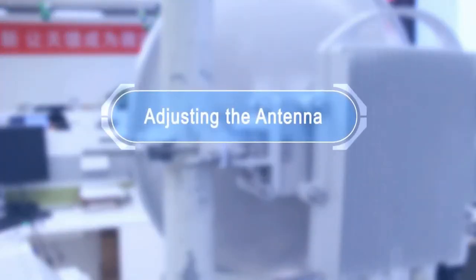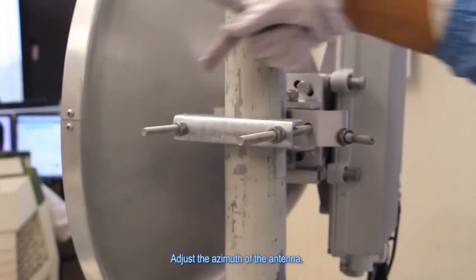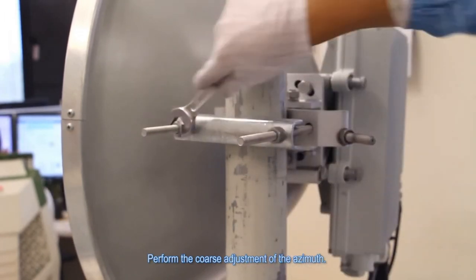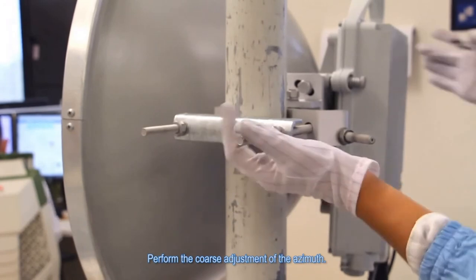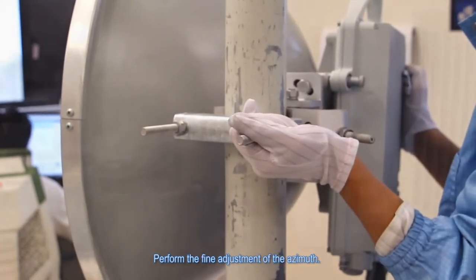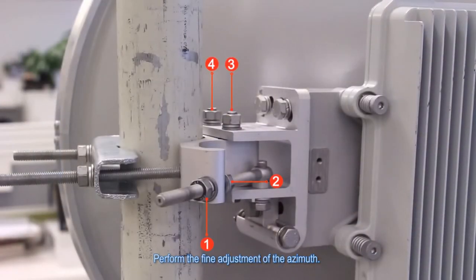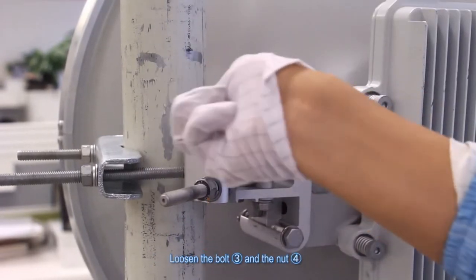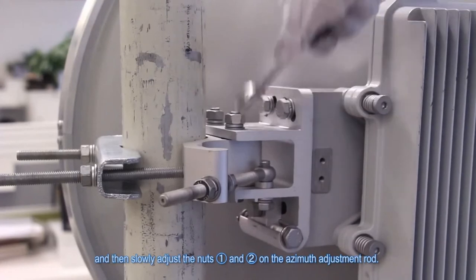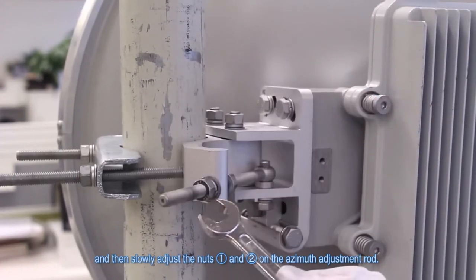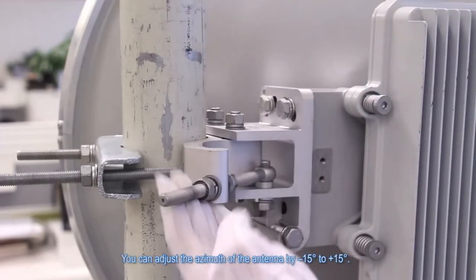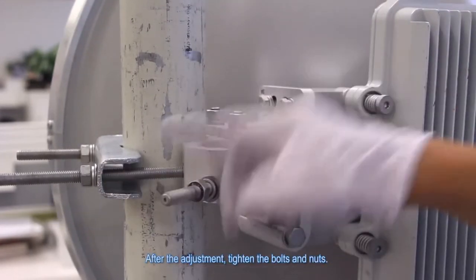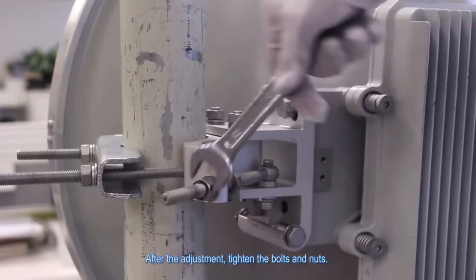Adjusting the antenna. Adjust the azimuth of the antenna. Perform the coarse adjustment of the azimuth. Perform the fine adjustment of the azimuth. Loosen bolt 3 and nut 4 and then slowly adjust nuts 1 and 2 on the azimuth adjustment rod. You can adjust the azimuth of the antenna by negative 15 degrees to positive 15 degrees. After the adjustment, tighten the bolts and nuts.